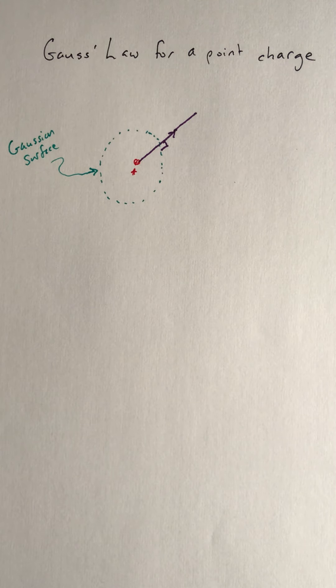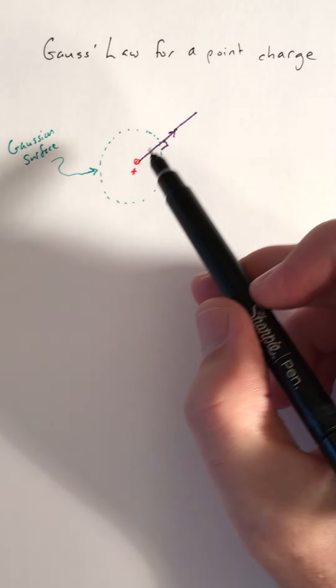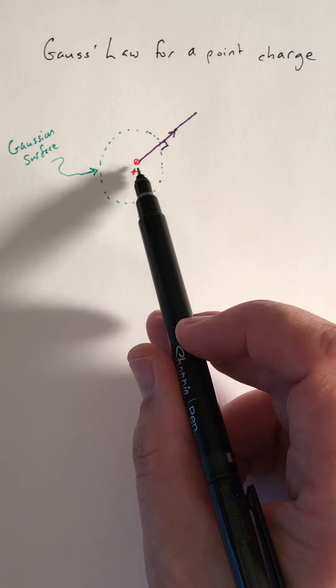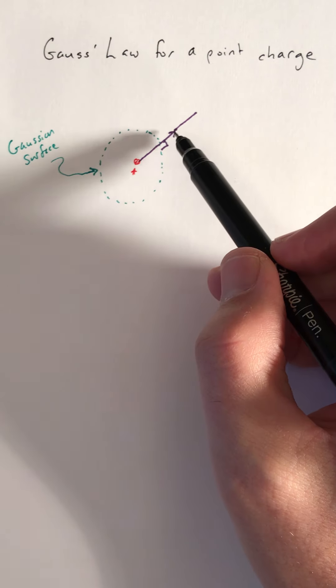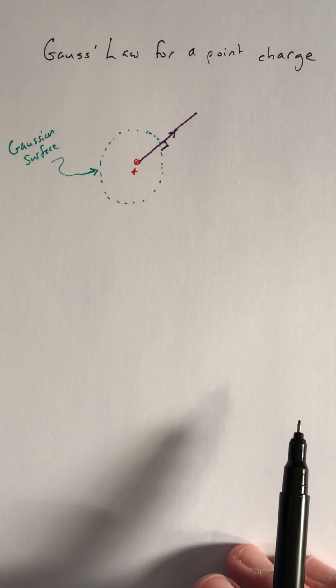We know this is a positive electrical charge, so electric field lines are going to point radially away from it. If it were a negative point charge, I'd just reverse the direction of this arrow so the electric field lines point in towards it.